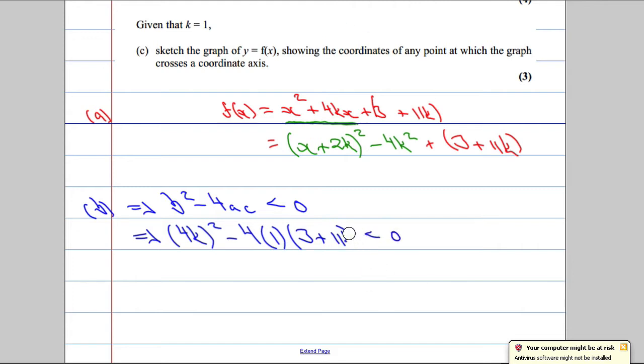So we get 4k to be squared minus 4 times a, which is 1, times c, which is all of this here, 3 plus 11k. 3 plus 11k is going to be less than 0. So just fix that, so it looks a wee bit neater.